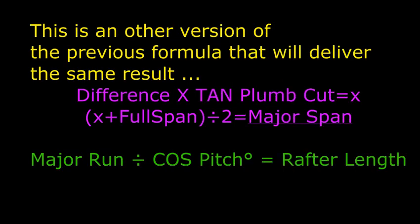This is another version of the previous formula we discussed. Also, the major run divided by the cosine of pitch in degrees will give you the rafter length. That's the line length of the rafter. You'll have to make deductions after that for the ridge board, obviously.